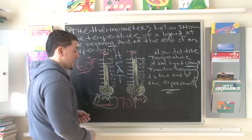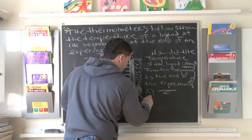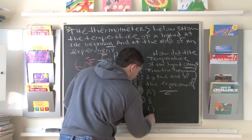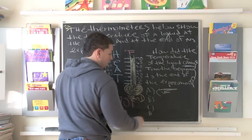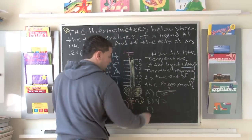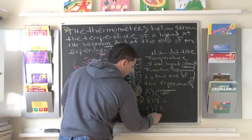So the choices that we have would be A, B, C, and D. Now, what is the temperature change? Did it go up 20 degrees? Did it go up 40 degrees? Or did it go up 10 degrees? Or did it go up 60 degrees?